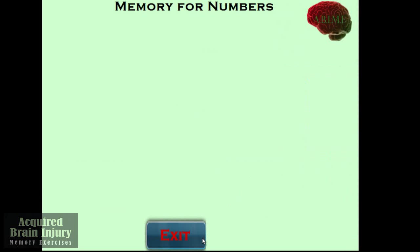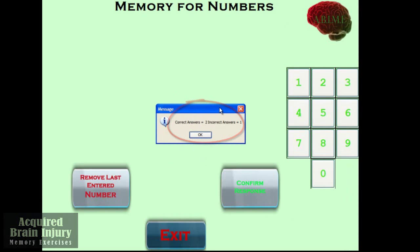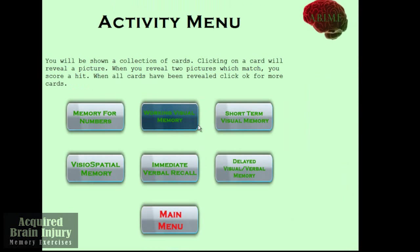I'll confirm and then click exit and I get the exit request here. And now it indicates that I have two correct and one incorrect answers. So this is an example of how the program keeps score.